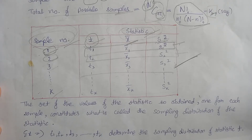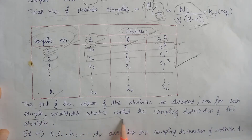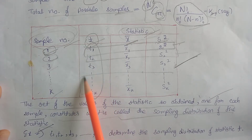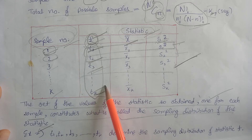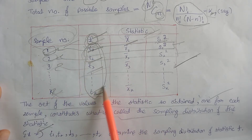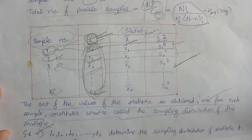The definition of the sampling distribution of a statistic is: the set of values of the statistic obtained one for each sample constitutes what is called the sampling distribution of that statistic. For example, all the values of the statistic T — one value for each sample — form a set which is the sampling distribution of the statistic T.